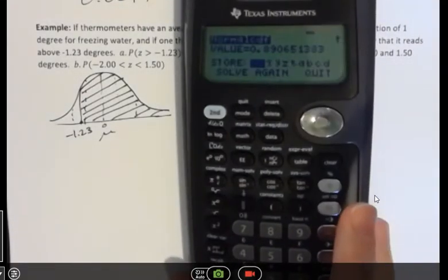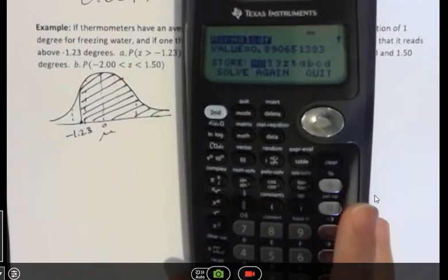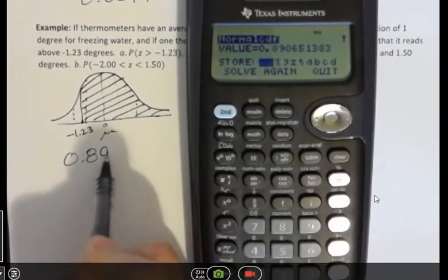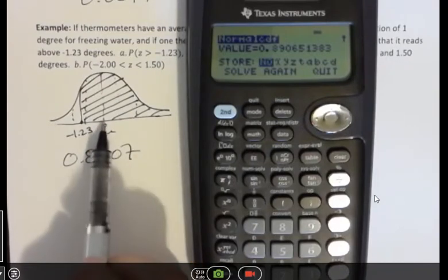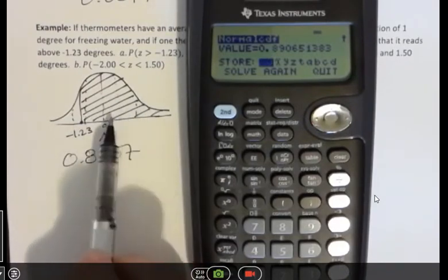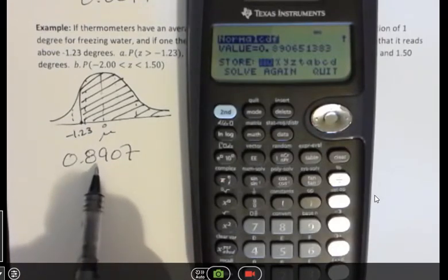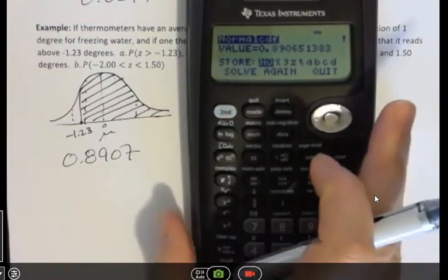And that gives me, rounded to the fourth place, 0.8907, which is what I would expect, that my area under my curve, which is like the probability, right? It's more than 50%, quite a bit more. It's almost 90% under there. That should make sense when you look at that.